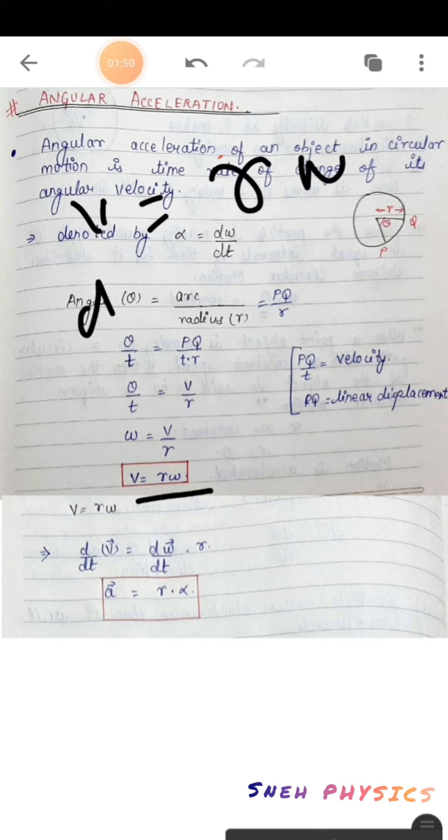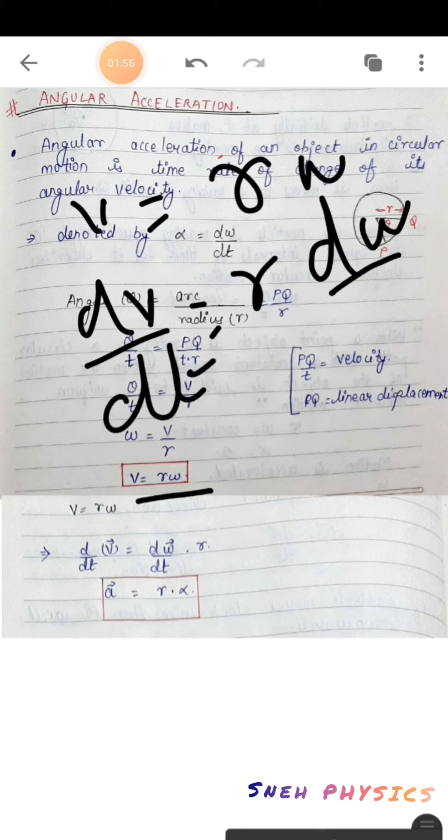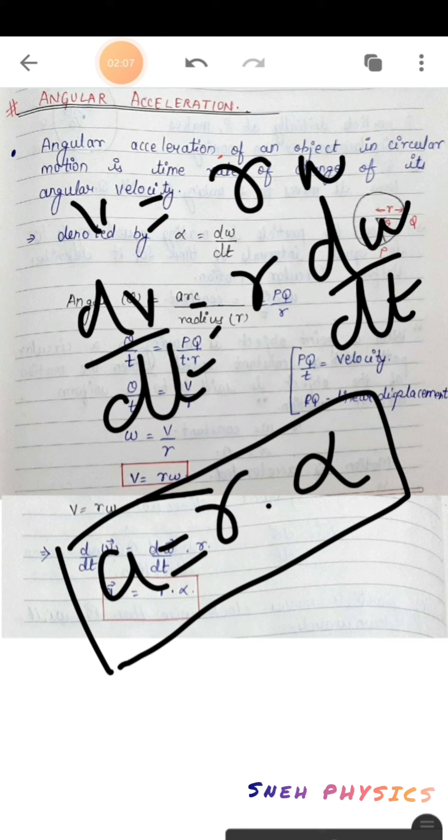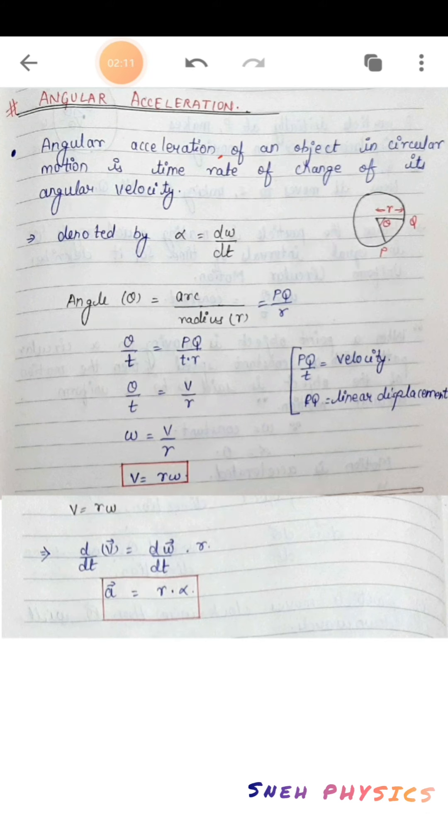Taking the derivative of r omega, we get dv by dt. Here r is constant, so we have d omega by dt. dv by dt is linear acceleration, and d omega by dt is angular acceleration. So this is the expression and relation between linear acceleration and angular acceleration.